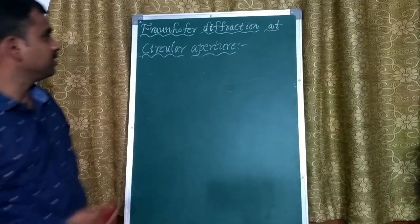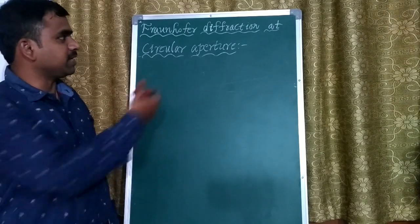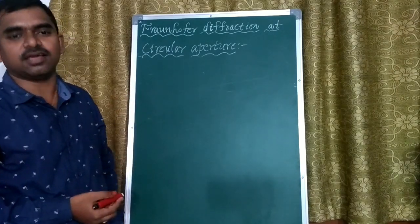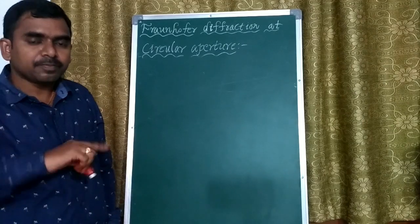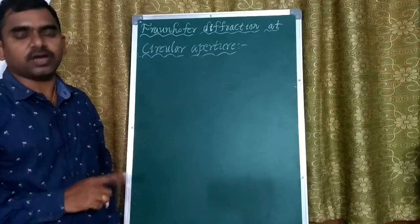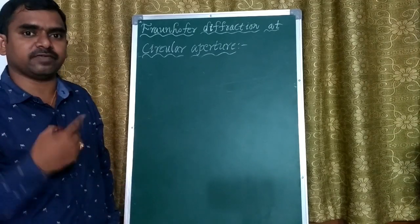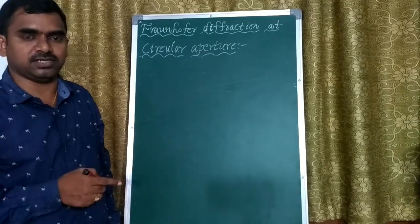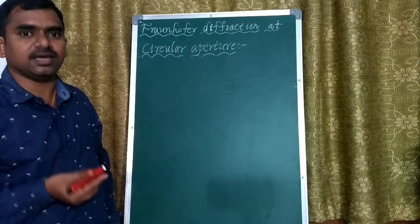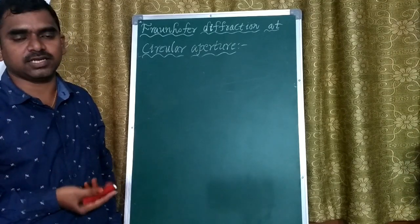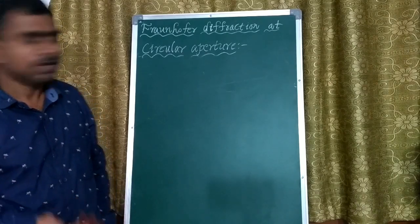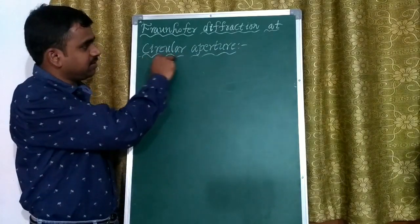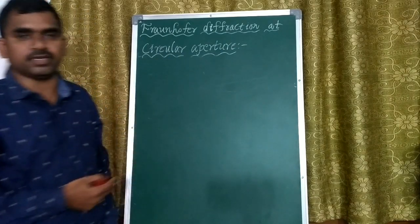Welcome to today's topic: Fraunhofer diffraction at a circular aperture. In the previous classes we discussed Fraunhofer diffraction at single slit and double slit, where the slits were in a rectangular shape. But here the obstacle is a circular aperture.